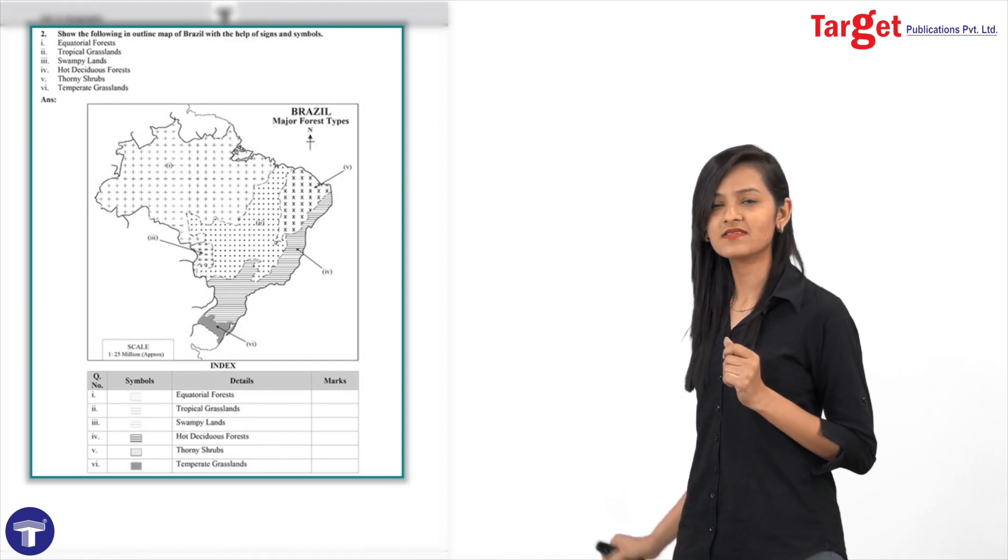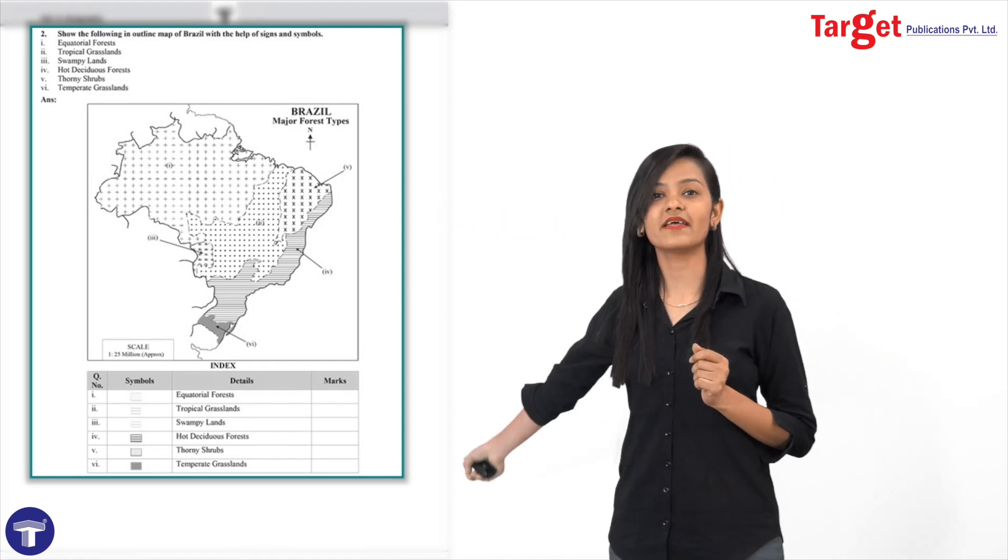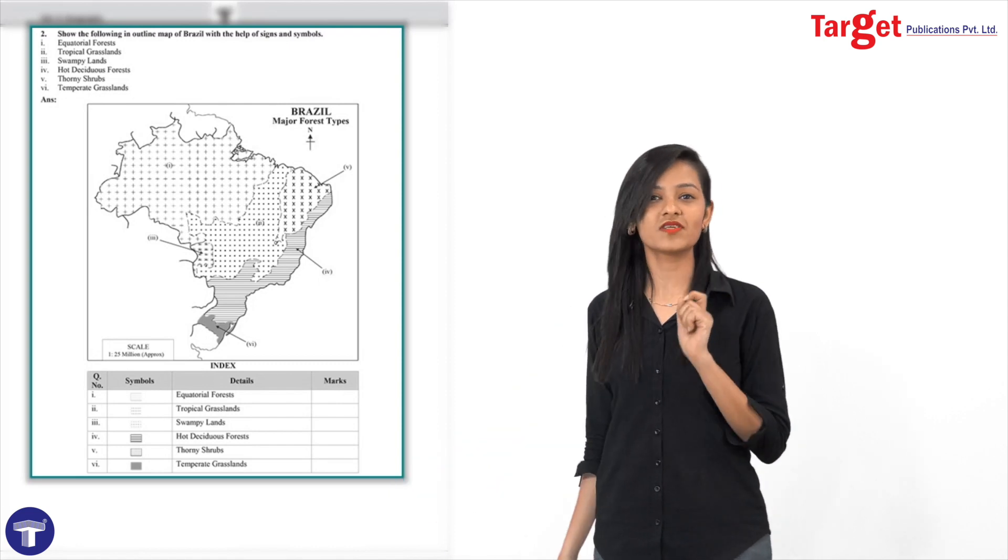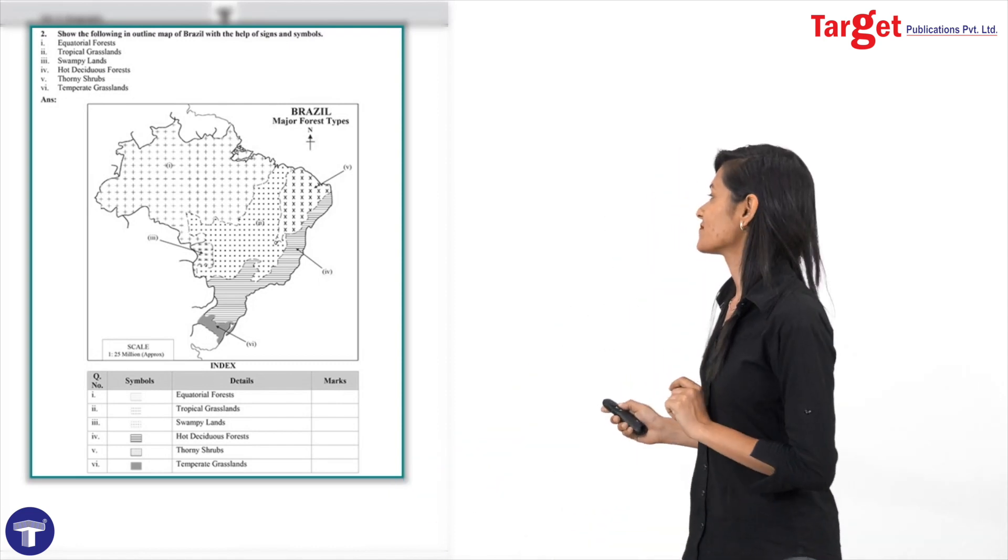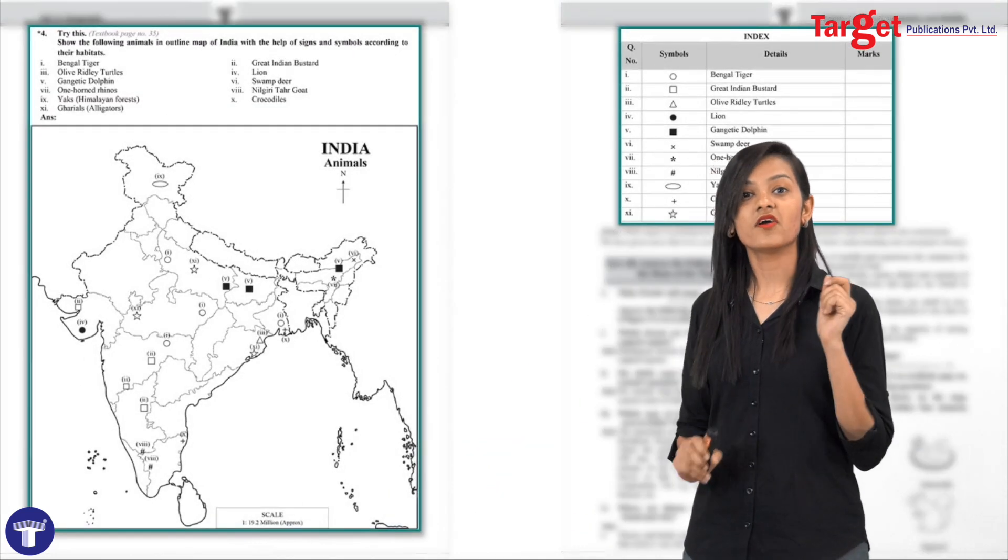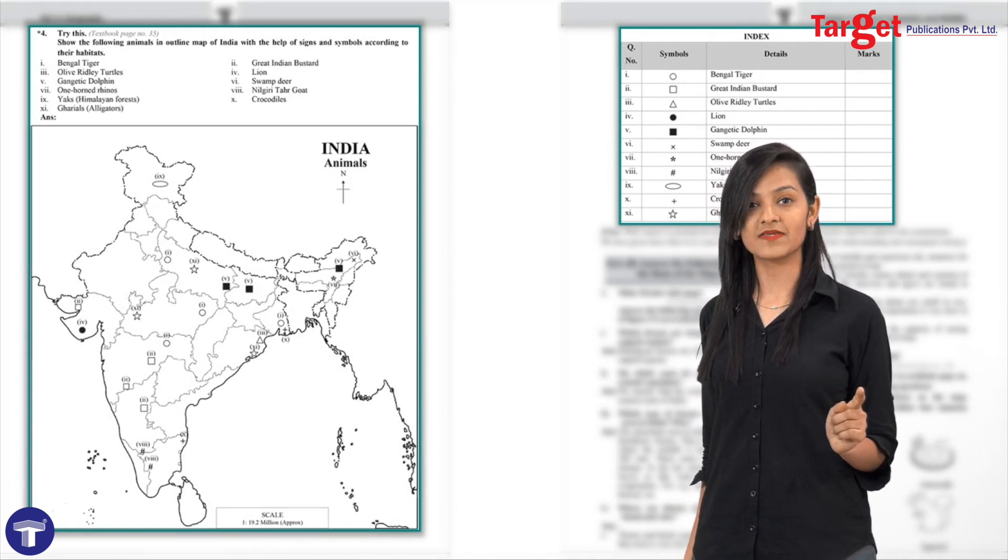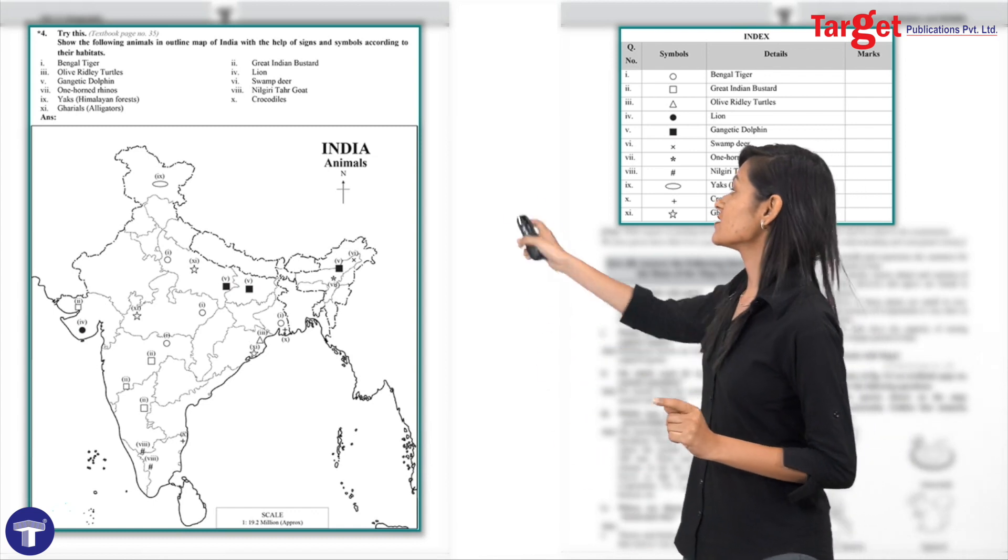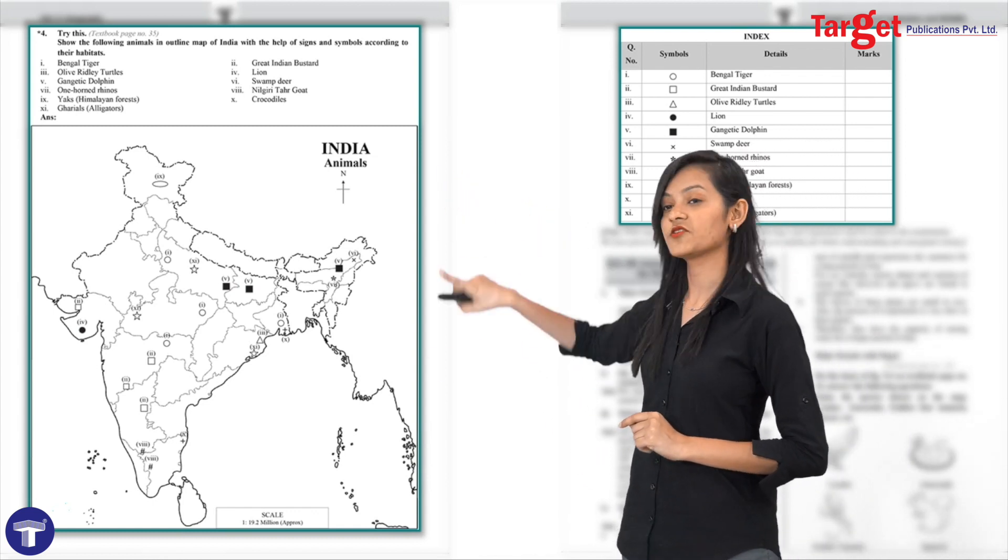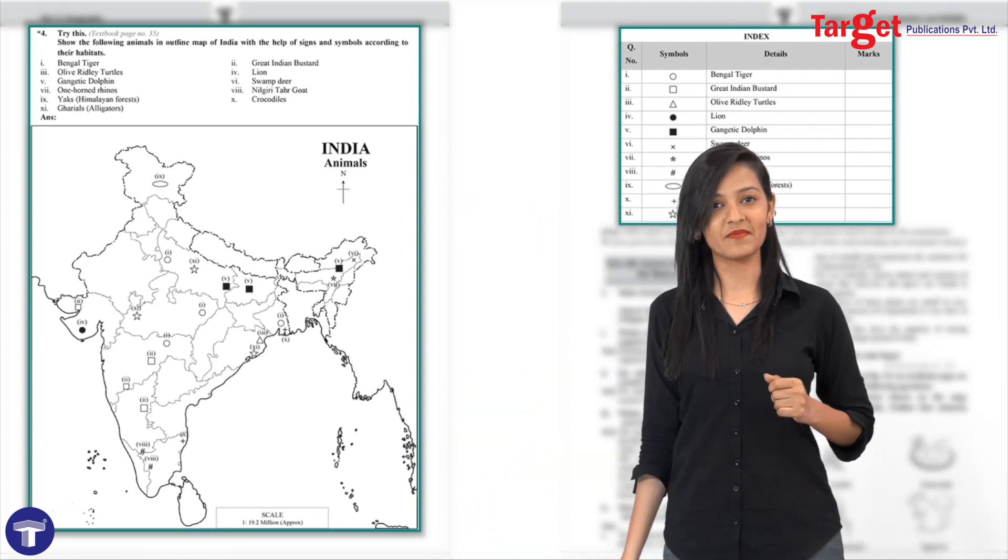In the same manner, we also expect that, not only just plotting on the map is important, but also you're supposed to mention the direction, scale and other elements of the map.